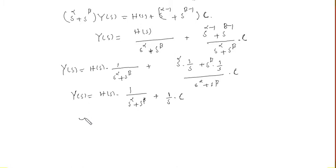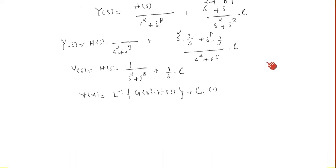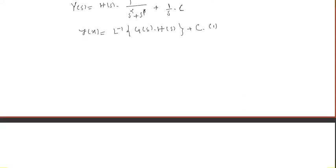So Y(s) equals H(s) times 1/(s^alpha + s^beta) plus C times (1/s). Applying the inverse Laplace transform, this becomes y(x), since the inverse Laplace of Y(s) returns the original function. I call 1/(s^alpha + s^beta) as G(s), whose inverse Laplace is G(x), and the inverse Laplace of (1/s) is just 1.